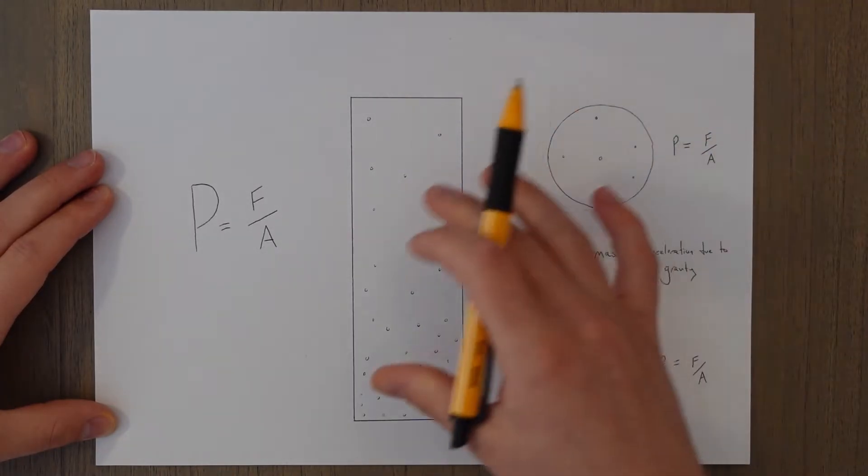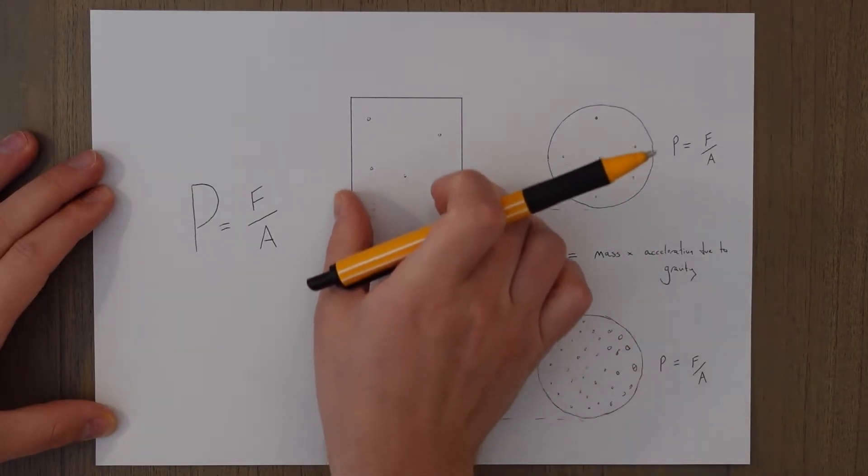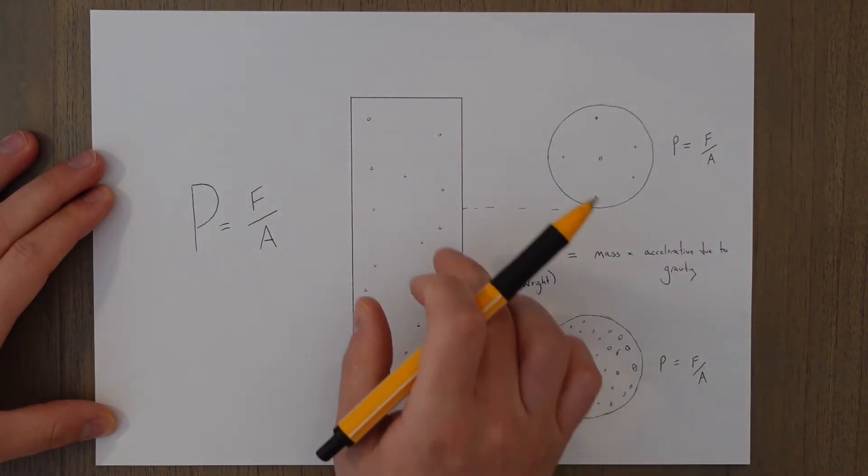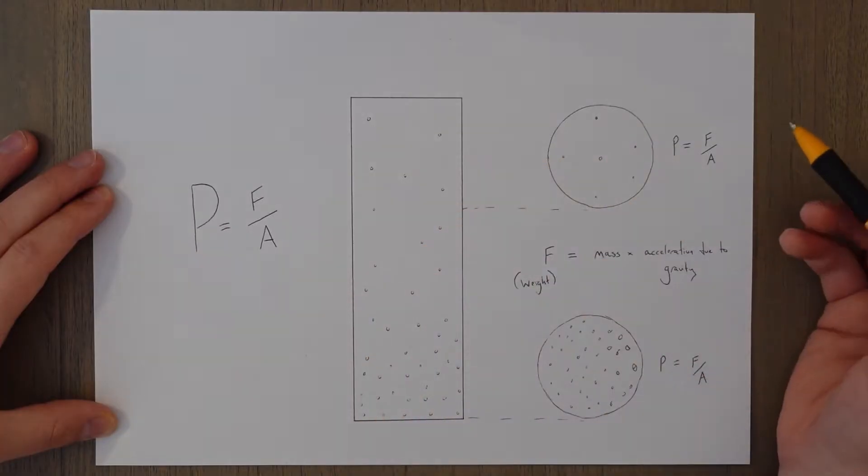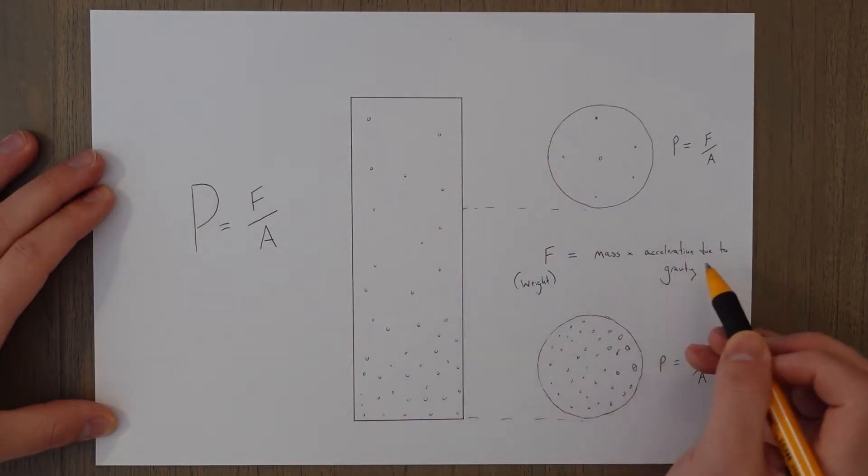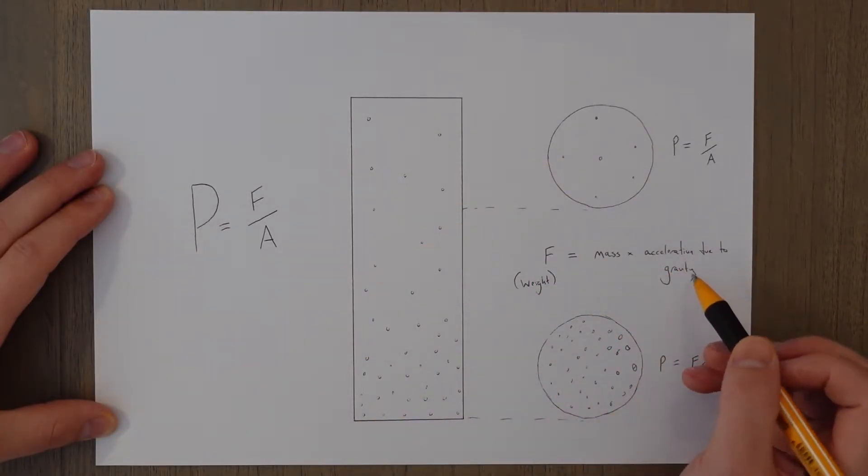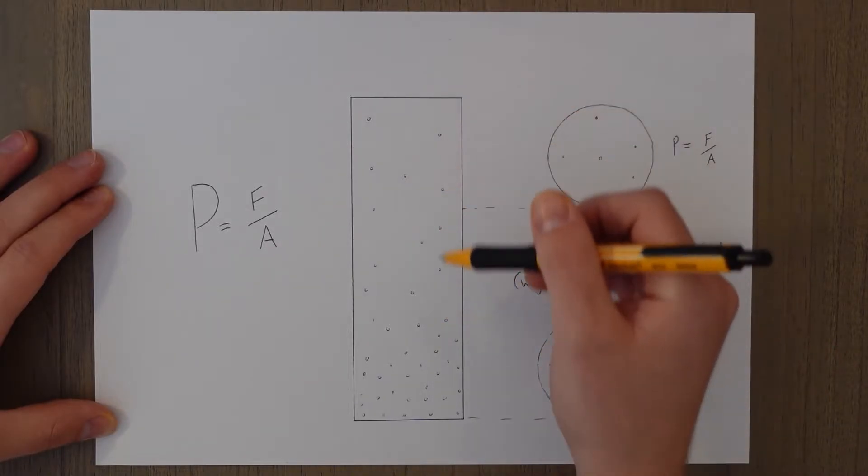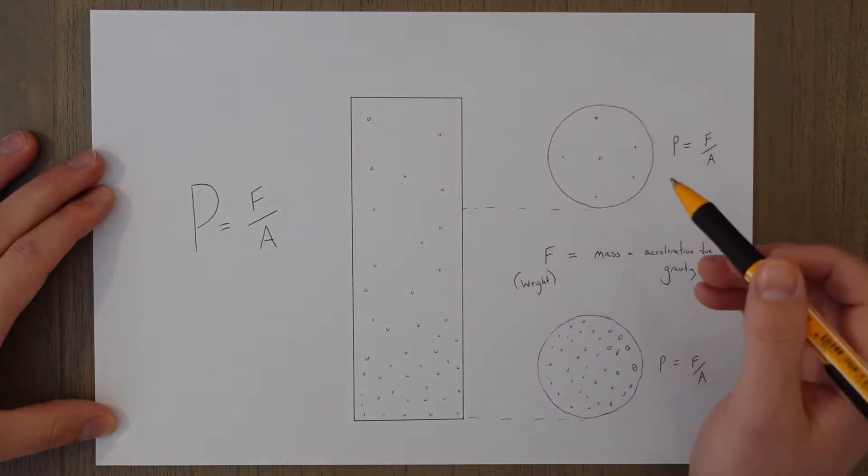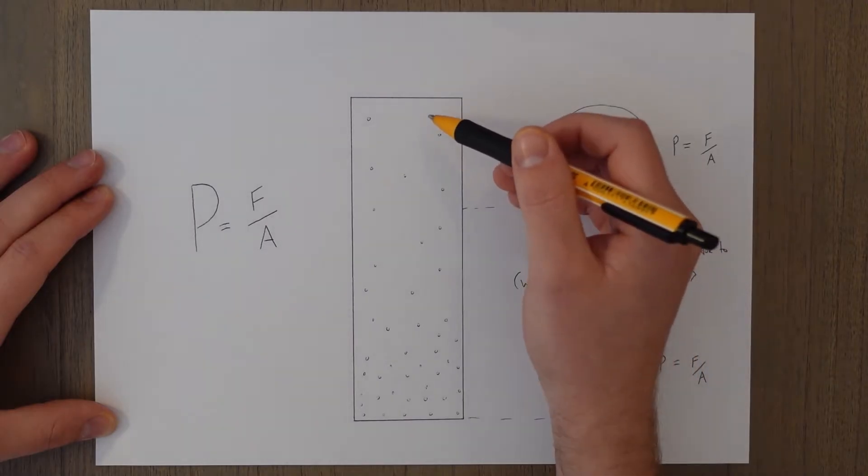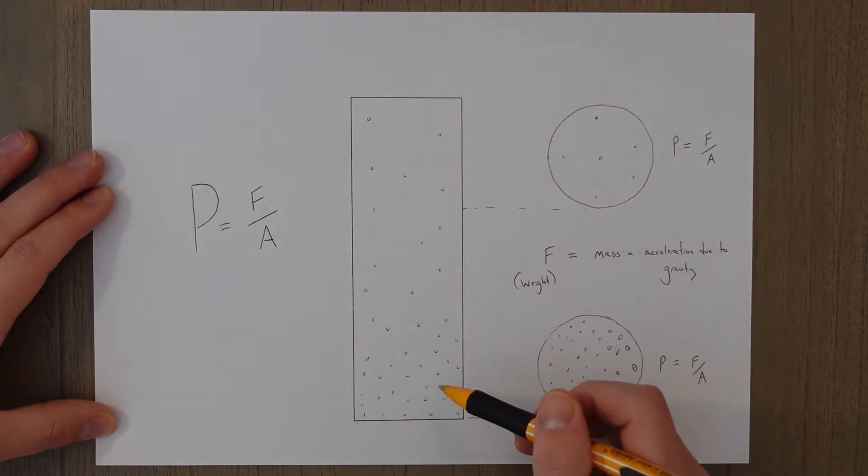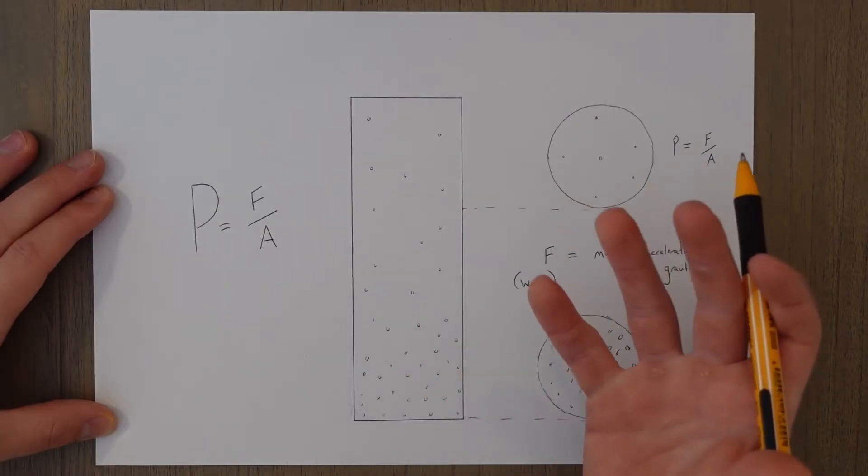as we travel up the column, the weight of the air, which is the mass times the acceleration due to gravity, reduces as we travel up the column. There's also fewer particles higher up and more particles lower down because they're basically being pulled down by gravity.